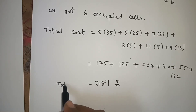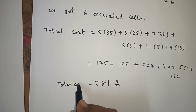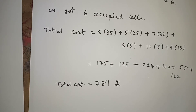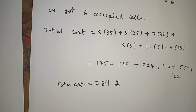Total cost is 781 rupees. We solved the same problem using the Northwest Corner Method and the Least Cost Cell Method. Out of these two, 781 is the minimum, obtained with the Least Cost Cell Method. This means the Least Cost Cell Method is better than the Northwest Corner Method because we get a much lower transportation cost. Next we will find Vogel's Approximation Method — if you get a much lower result there, that would be best.